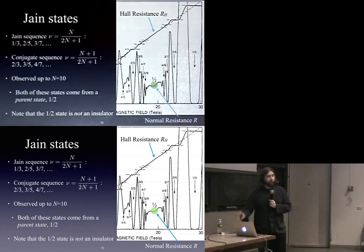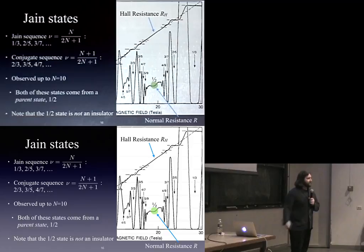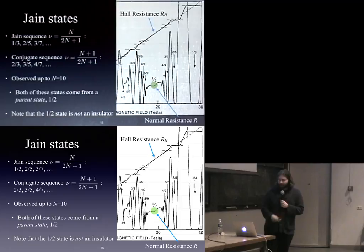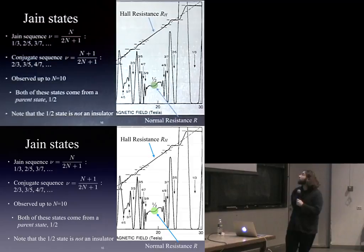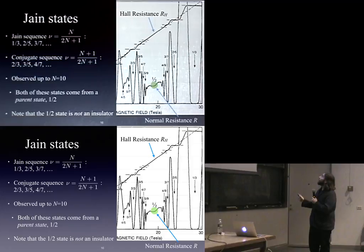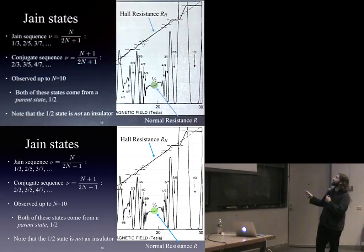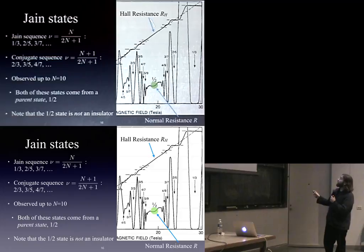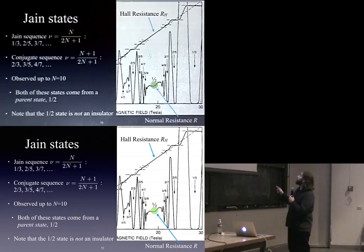For all the other states there's a wide plateau where the value is one-third, or two-fifths, etc. Whereas for one-half, there's no wide plateau. It's clear that there's only exactly one value of the magnetic field where the Hall conductance is really one-half, instead of some wide range. And that's related to the fact that it is not this nice, big, insulating window.